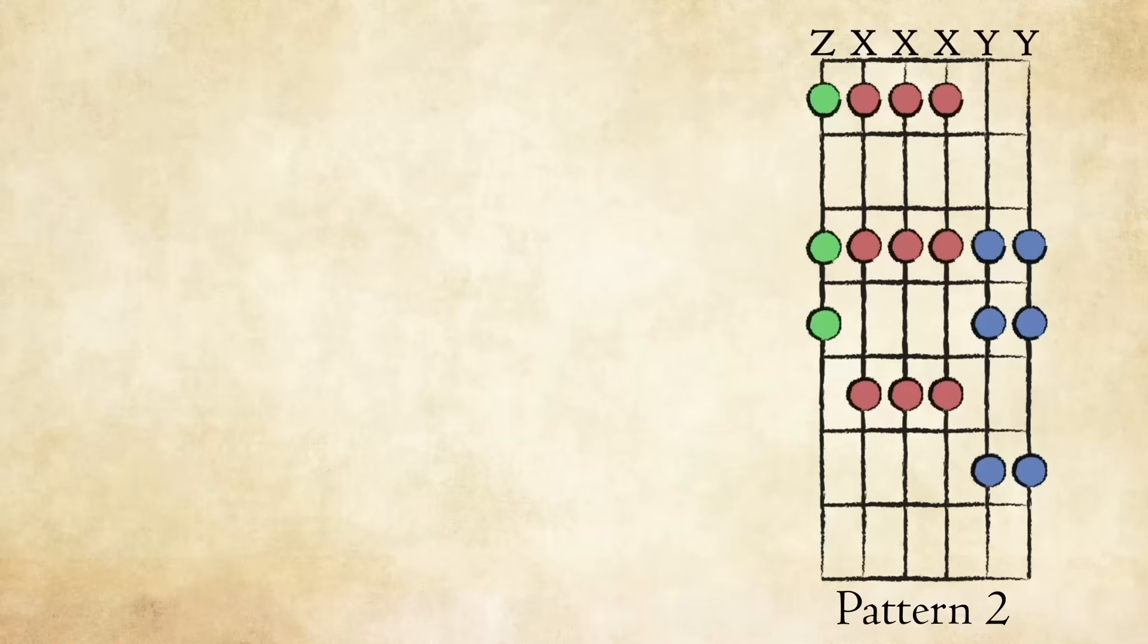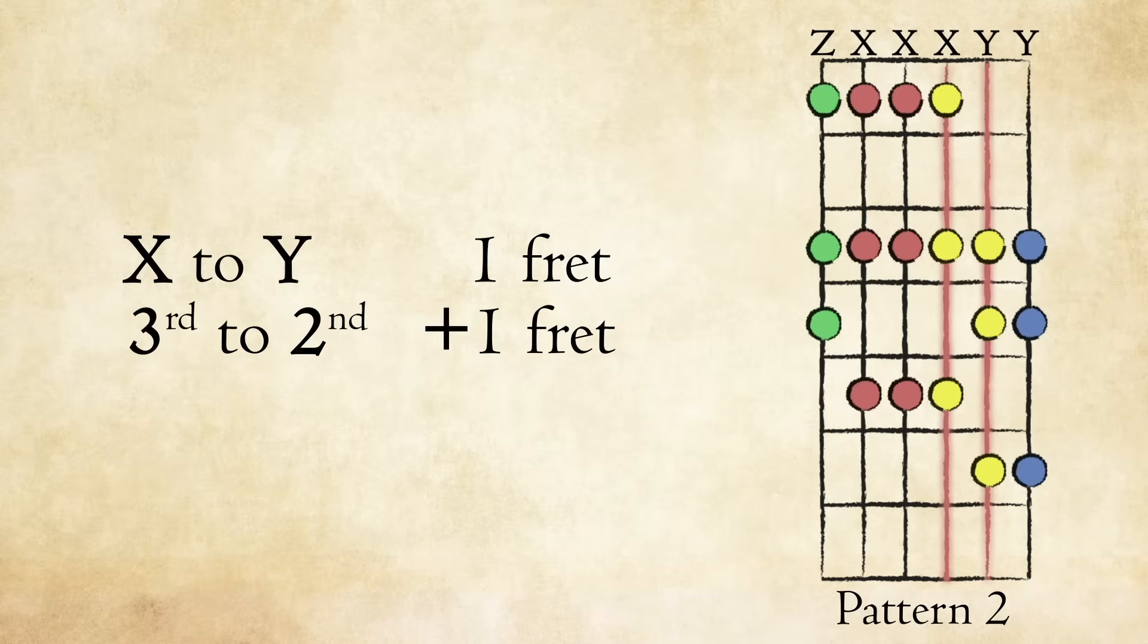Take note of pattern 2. In this pattern, you can see that on the third string we have shape X, while on the second string we have shape Y. In this instance, the first finger has shifted up two frets. This is not a violation of the rules, but an accumulation of them. Because we are moving from X to Y and third to second string, we shift up one fret for each one of those transitions.